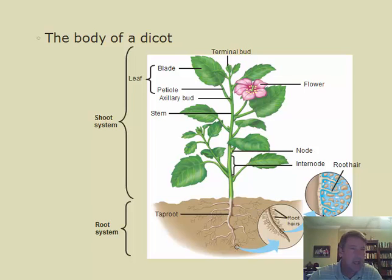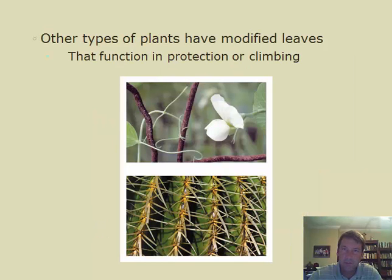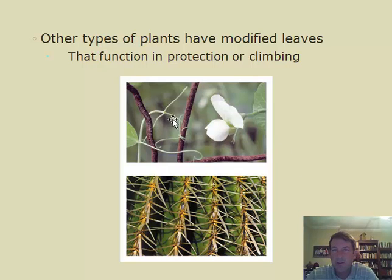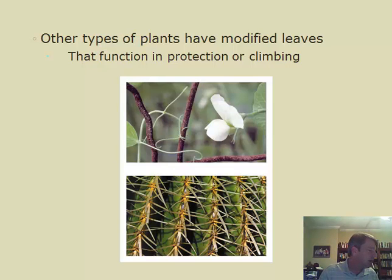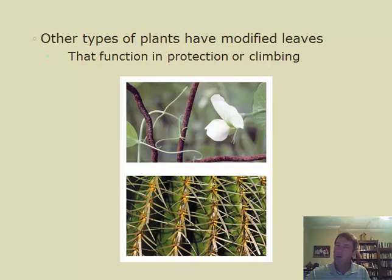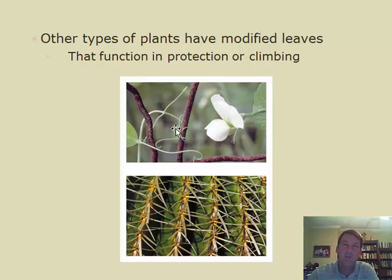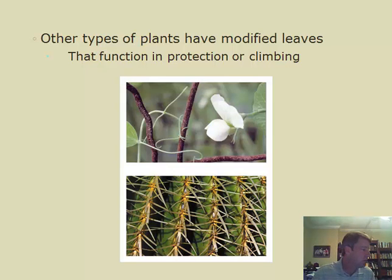Some leaves have modifications. A tendril is an extension that comes off a plant — commonly seen on vines like pea plants — and they help the plant grab hold of a structure to climb upward. Tendrils are actually modified leaves. Spines on cacti are also modified leaves. There is a lot of variation with these structures throughout the plant kingdom.